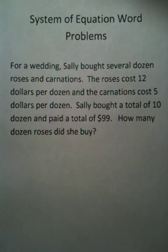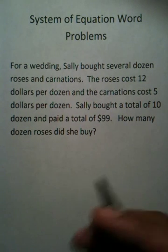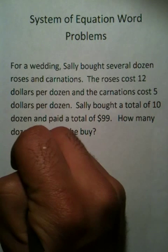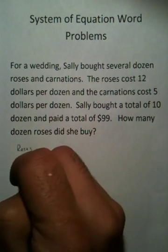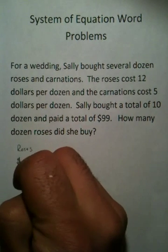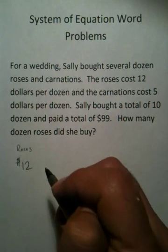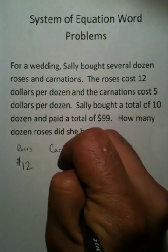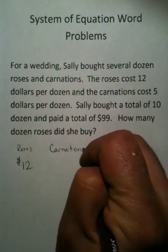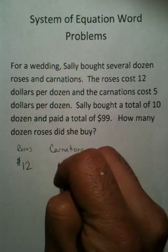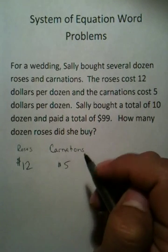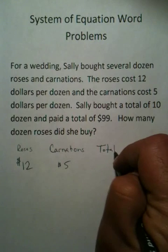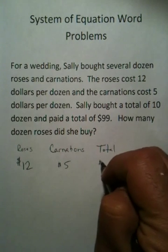What happened is, they gave you information, such as you had roses, and you knew the roses cost twelve dollars. Then you had carnations, and the carnations cost five dollars. And then you spent a total of ninety-nine dollars.